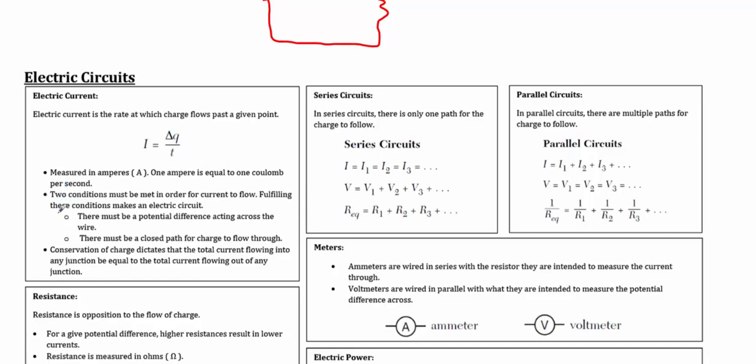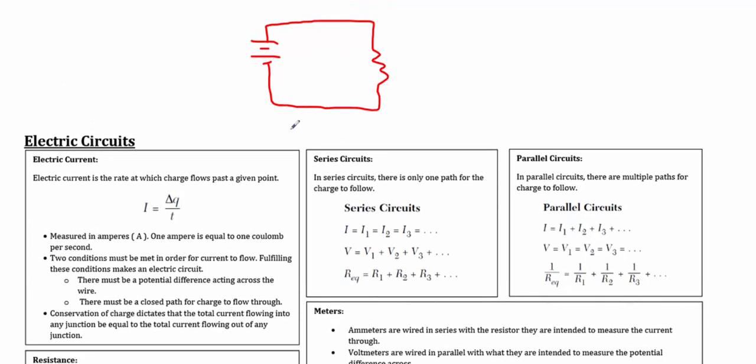Two conditions must be true for current to flow. You're always going to need a potential difference, which is really the battery, the power supply itself. Something needs to push the charge. And there always needs to be an enclosed path for the current to flow. If there's a break in the circuit or if there's no end, there's going to be no flow. One good way to look at that is make sure the positive and negative terminals of your battery are completely connected.